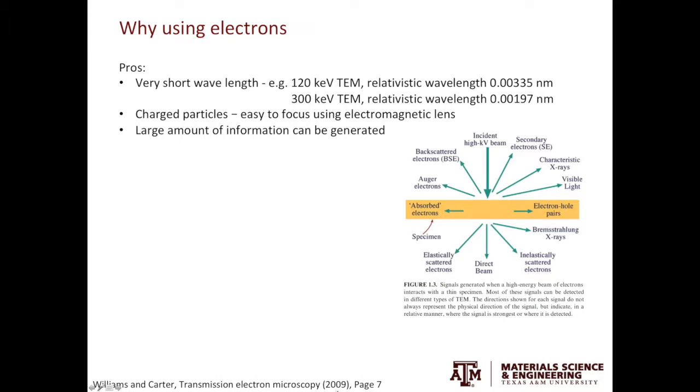From the image on the right, you can see that when the electron beam goes through the specimen, you can get elastically scattered electrons, which will give you the diffraction information. You can also get the inelastically scattered electrons. The loss of energy will be transferred to the characteristic X-ray, which will provide the chemical information.